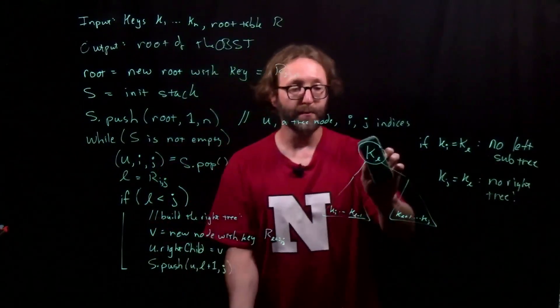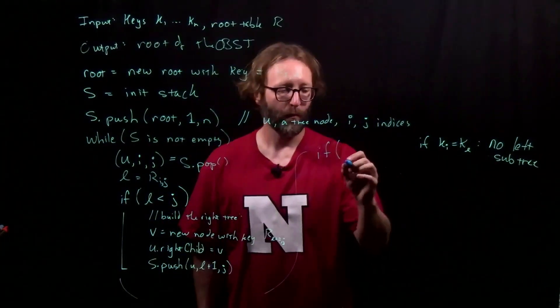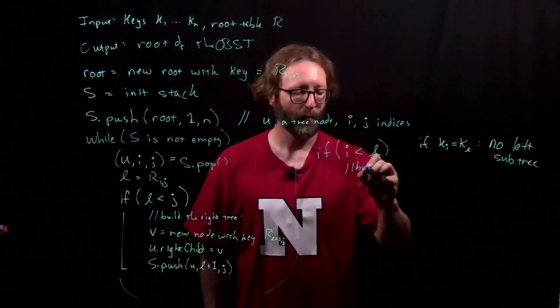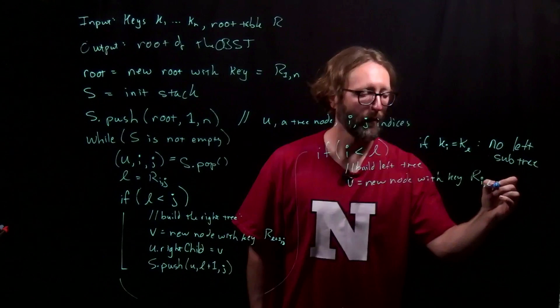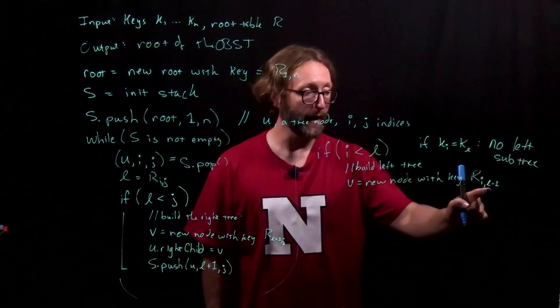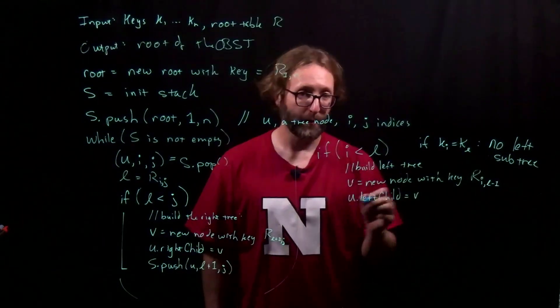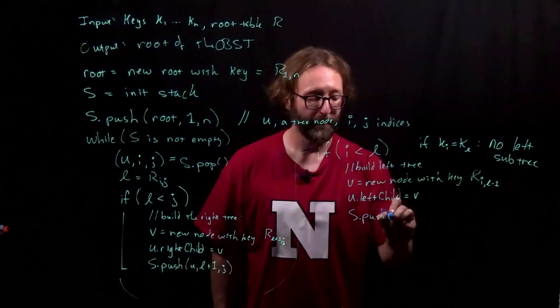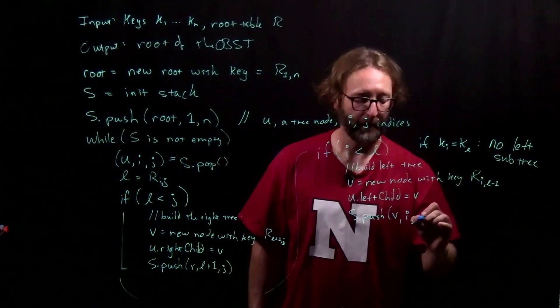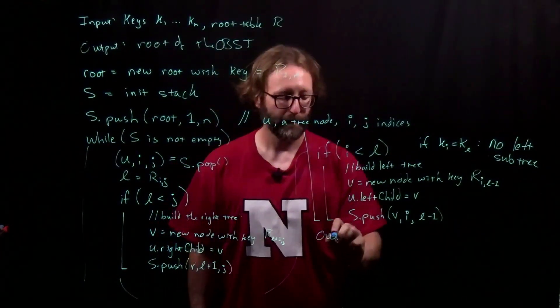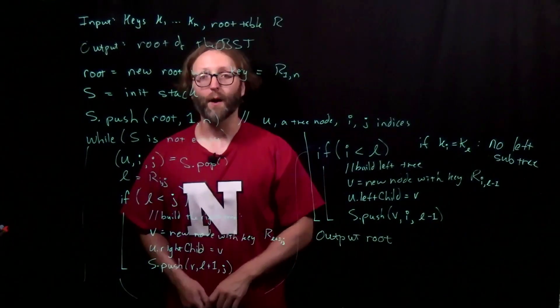Now I'll use the other condition to determine whether or not we need to build the left subtree. We'll create a new node with the key r sub i l minus 1, and we'll make it use left child. Then we push it on the stack for later processing. And this is how we can use a stack along with the root table to actually build the optimal binary search tree.